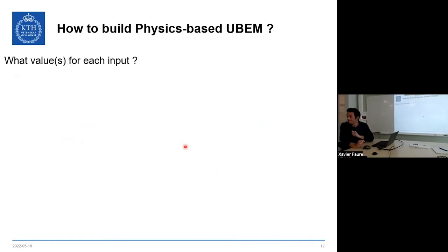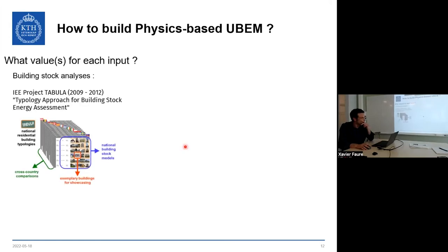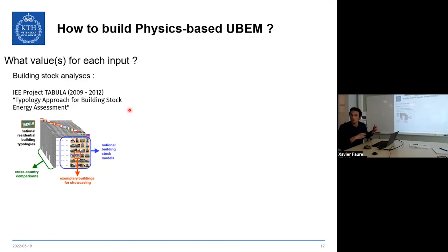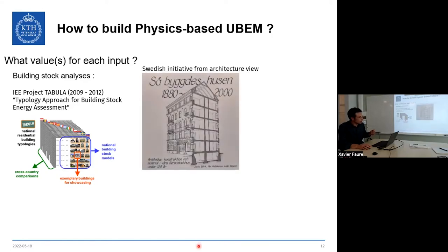For input values at the U-BEM scale, the TABULA project — a well-known European project from 2009 to 2012 — made a clustering approach of buildings, giving expected U-values for windows, roofs, and walls by construction year and building type. It's been used by most European U-BEM tools. In Sweden, there's also a book tracing building evolution over the last century from an architectural perspective, providing useful information for feeding the clustering process.